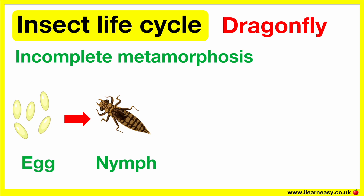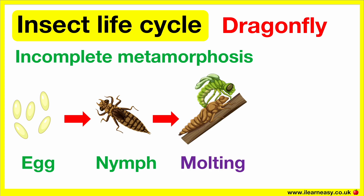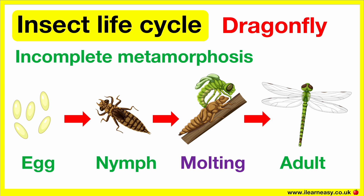In warmer climates, it can take a few months, and in colder climates, it can take a few years. During this stage, the nymph will molt — this is when it sheds its old skin. The adult dragonfly then emerges. It will wait for its body and wings to harden before it can fly. Once it's able to fly, the dragonfly begins hunting for food and will mate and lay eggs to repeat this cycle.